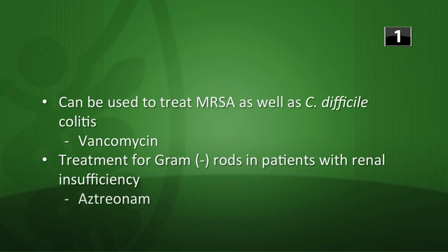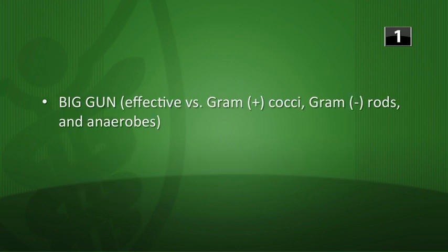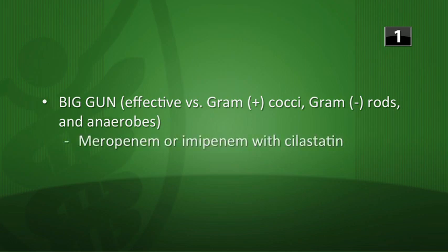Treatment for gram-negative rods in patients with renal insufficiency is aztreonam. The big gun effective against gram-positive cocci, gram-negative rods, and anaerobes could be meropenem or the combination of imipenem with cilastatin.